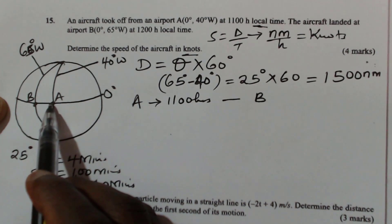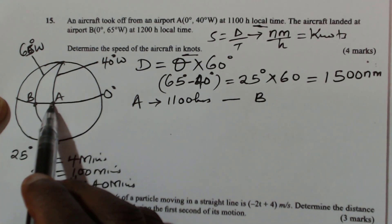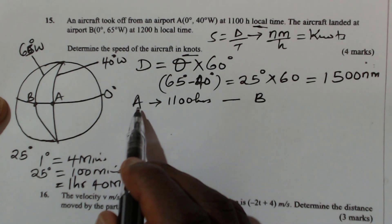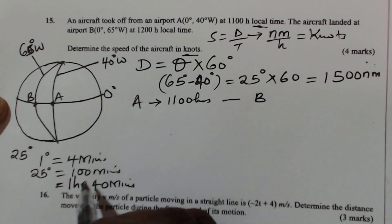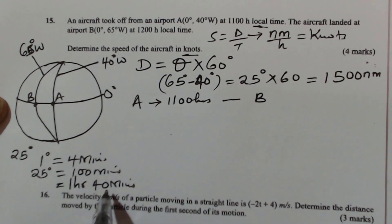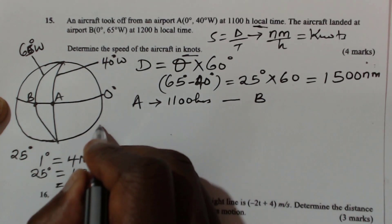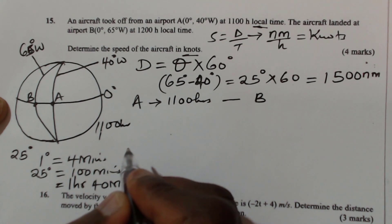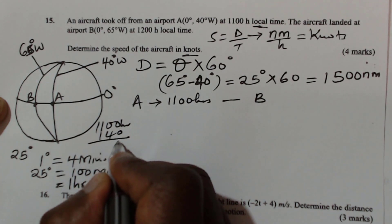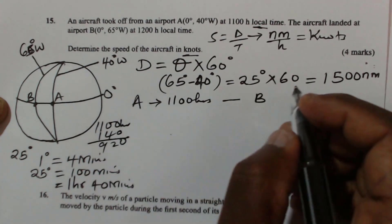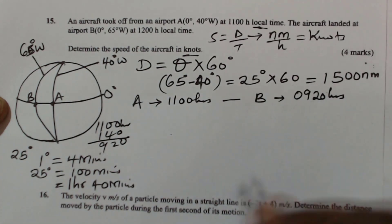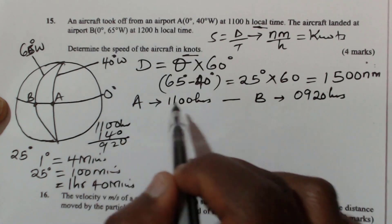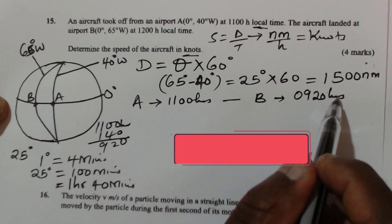Place A is ahead of time because it is more to the east of B. A is ahead of B by 1 hour and 40 minutes. So when the local time at A was 11:00 hours, at B we subtract 1 hour and 40 minutes. That gives 11:00 hours minus 1 hour 40 minutes, which equals 09:20. So when the aircraft was taking off from A at 11:00 hours, it was 09:20 hours at B.